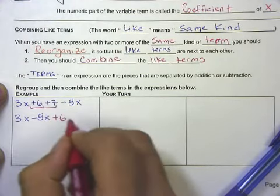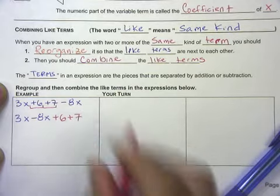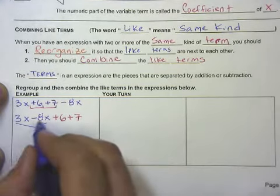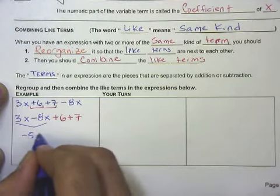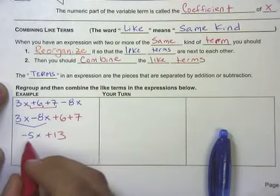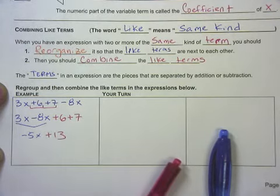Now that we have those reorganized, we can combine them. 3x minus 8x is negative 5x. 6 plus 7 is positive 13. We've got the variable term in front, so we're happy with this answer.